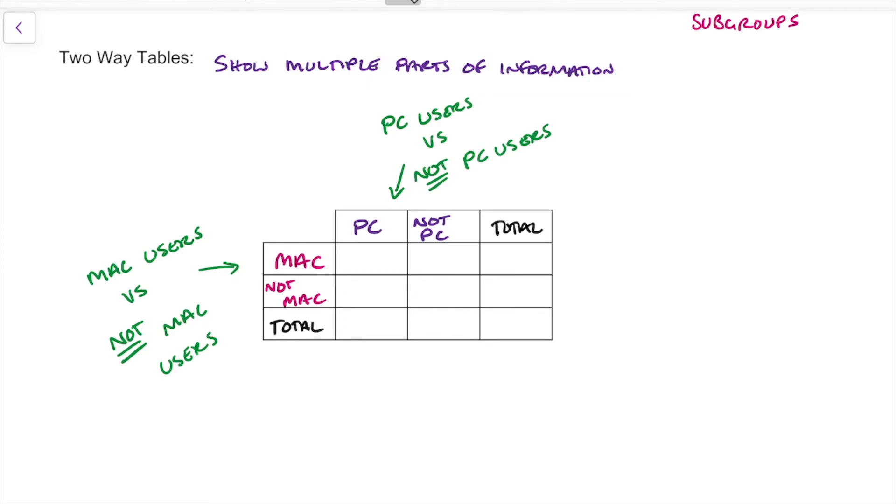So we're going to total each column and we're going to total each row and get a big total at the end. So let's pop that information back in.